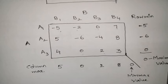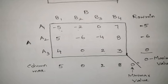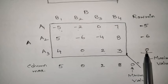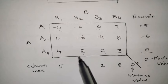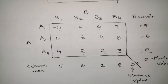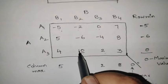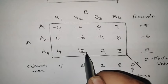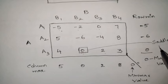Since the maximin value and the minimax value are both equal to 0, we can say that the game has a saddle point. Now let us identify the position of the saddle point. The maximin value 0 came from the third row, and the minimax value 0 came from the second column. So the position at row A3, column B2 is the saddle point.